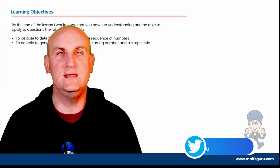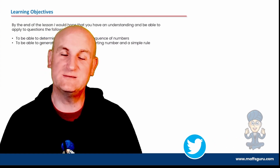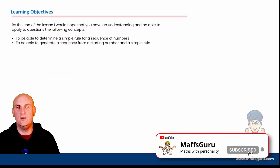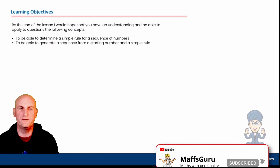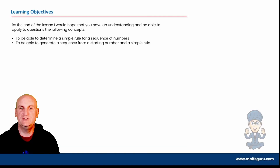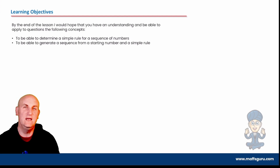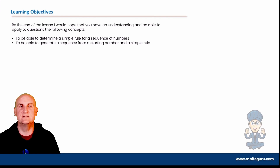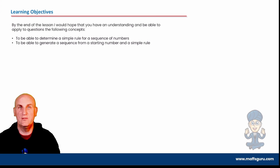This video is part of the Year 11 General Maths Course Units 1 and 2, but it doesn't matter if you're not in Australia — it's relevant throughout the world. We're going to be able to determine a simple rule for a sequence of numbers and generate a sequence from a starting number and a simple rule. If you think this is easy, trust me, watch the video. It's the foundation for so much more that is coming.